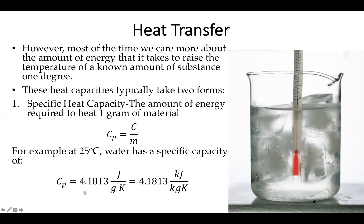Engineers and physicists sometimes rephrase specific heat capacity as kilojoules per kilogram, which is the same as multiplying and dividing by a thousand — so the ratio of units remains the same. You need one kilojoule, or one kilocalorie, to heat one kilogram or one liter of water one degree Celsius. This is a useful reference point for the units of energy we work with.